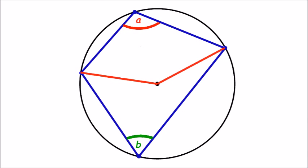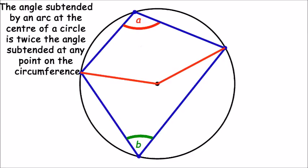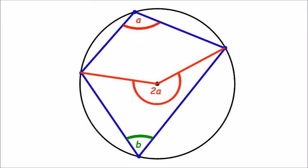So we need to draw two radii as shown. Since an angle subtended at the circumference by an arc is half that subtended at the center, the angles around the center are 2a and 2b.